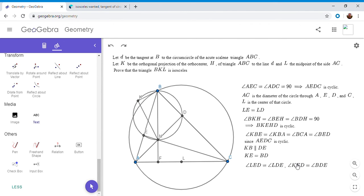And so if we add the two sides of each of these equations, LED plus KED, that's angle KEL, and LDE plus BDE, that's LDB. So by adding the two, we get angle KEL is equal to angle BDL.